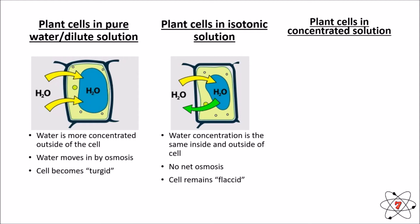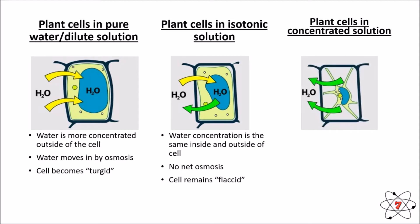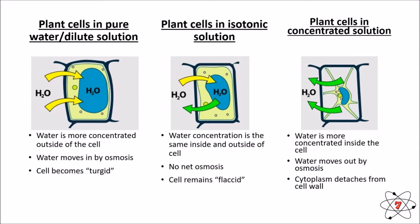If we put plant cells in a concentrated solution, there is more water inside the cell than outside, so water will move out by osmosis. When this happens, the cytoplasm detaches from the cell wall because there's no longer any water inside pushing the cytoplasm against it. The vacuole becomes fairly empty and we call this process plasmolysis. If you want to learn more, we have a video where you can perform an experiment on potatoes to see how this process works.